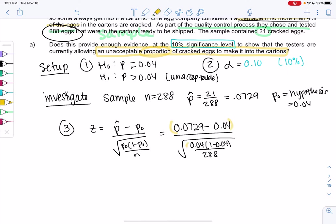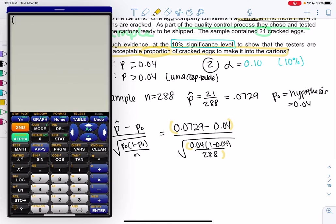If we add parentheses, we can do everything at once. I put parentheses on the numerator, 0.0729 minus 0.04, divided by square root, and then make sure all of those numbers are in the square root: 0.04, 1 minus 0.04, divided by 288. Notice that square root bar is over all those numbers. And I get a Z-score of 2.849.